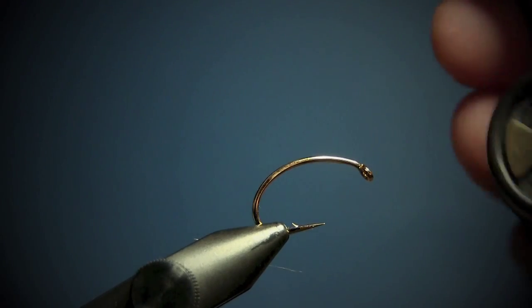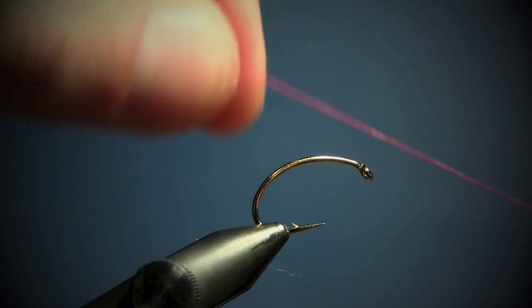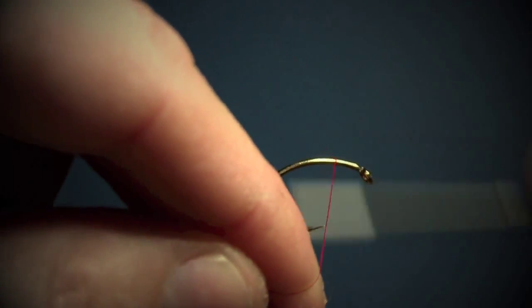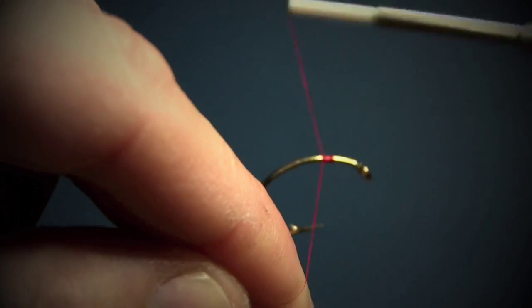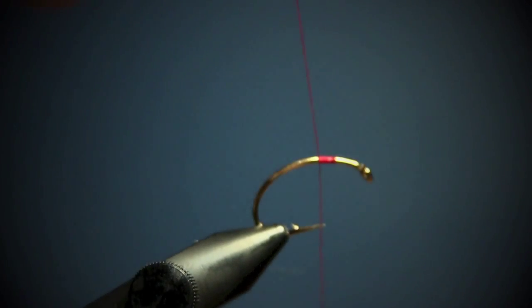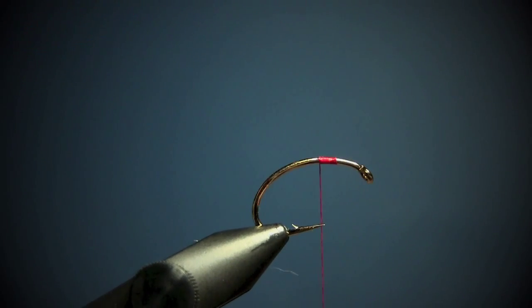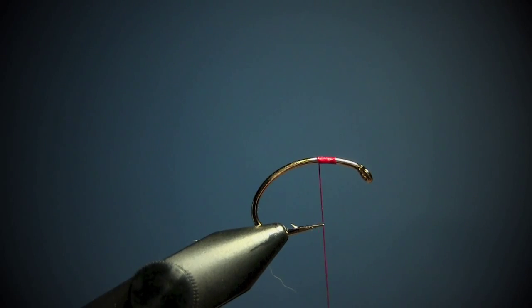The thread I'm using is Uni 6.0, the red one. I start at the center of the hook, cut off, and I'm using copper wire from old TVs.